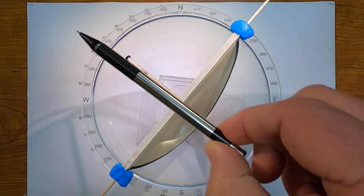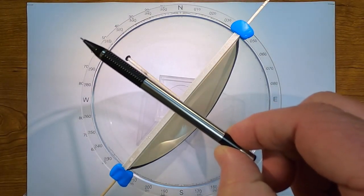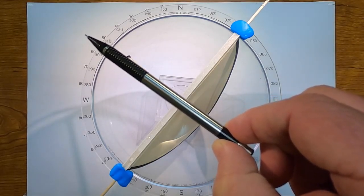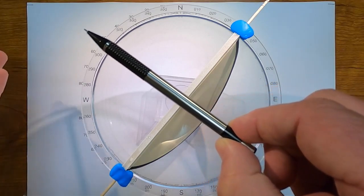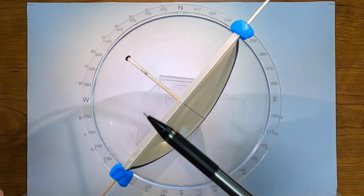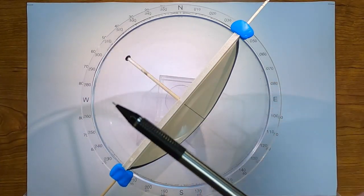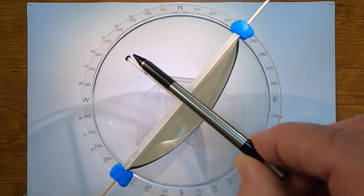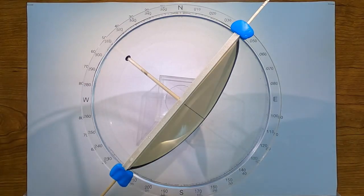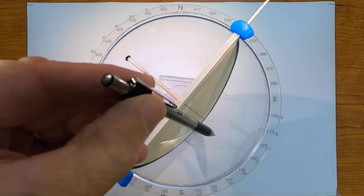The pole plunges off to the northwest at 310. The trend, I should say, is 310. That's the compass direction of the pole. And the pole has a plunge of 30 degrees. Again, complementary to the dip of 60 degrees for the plane.